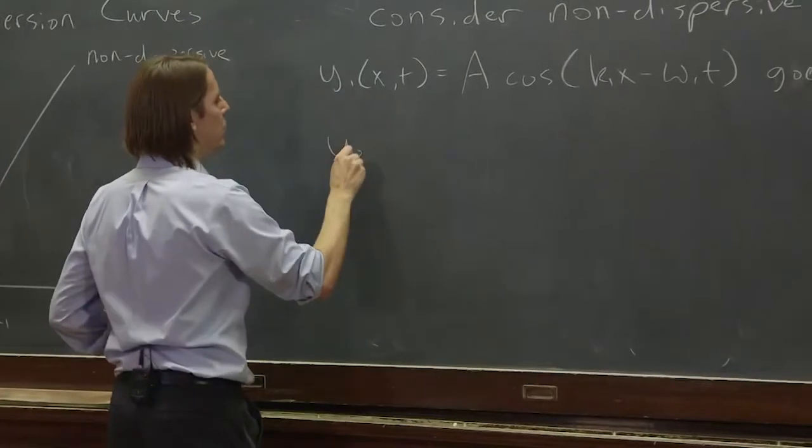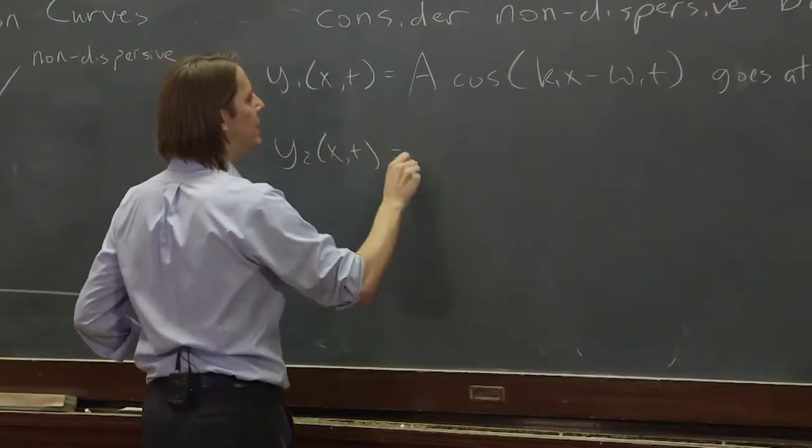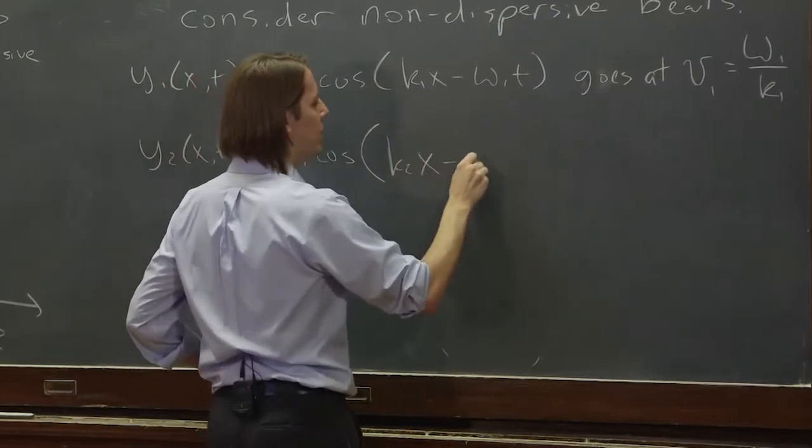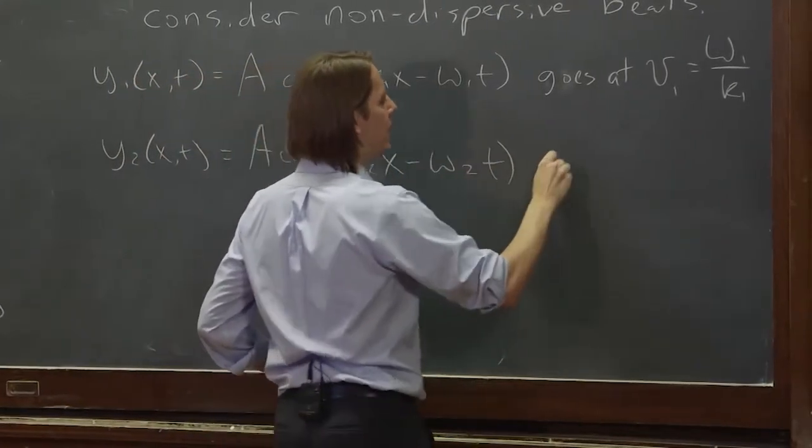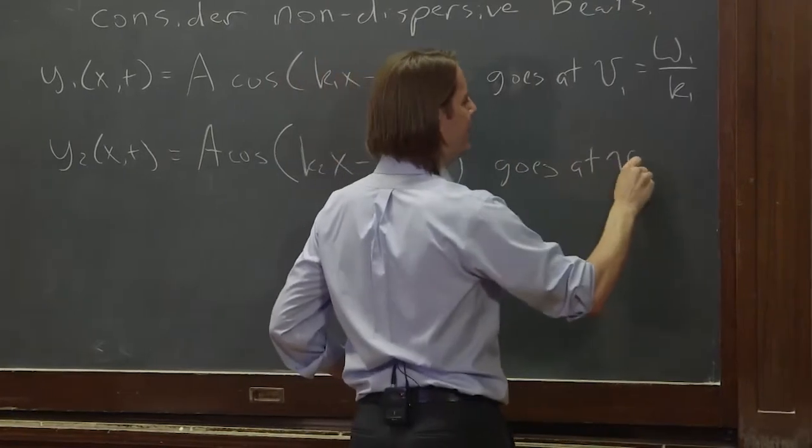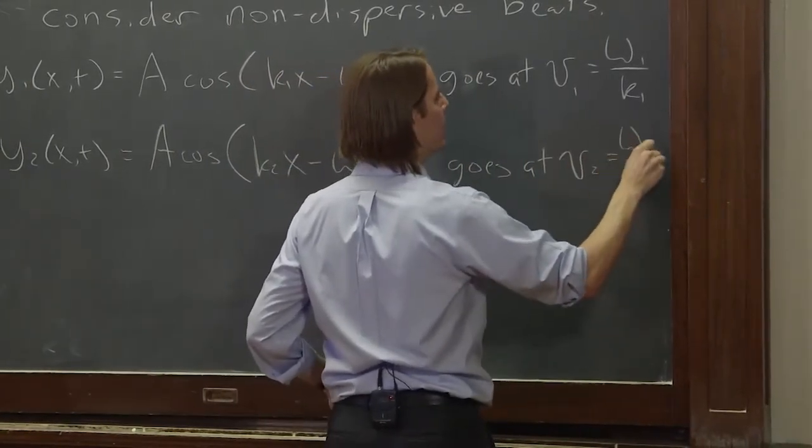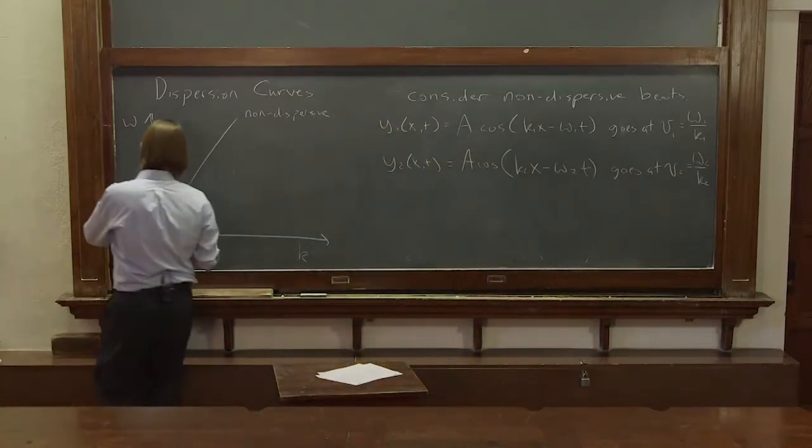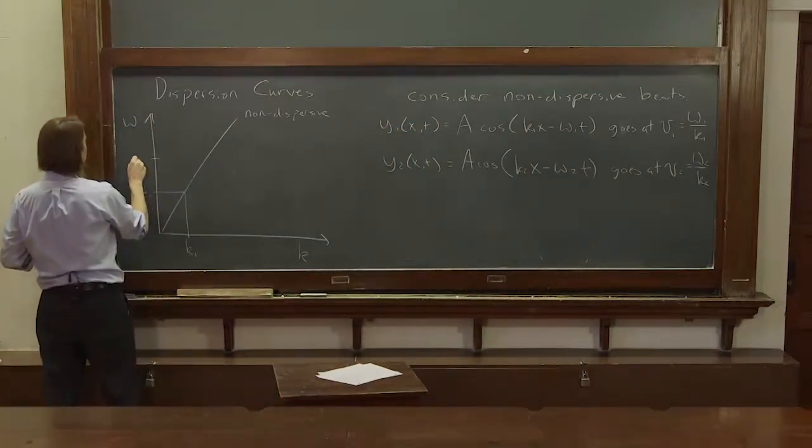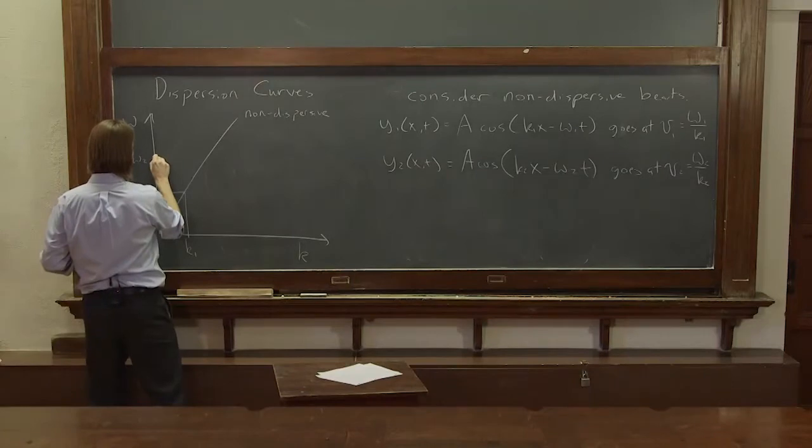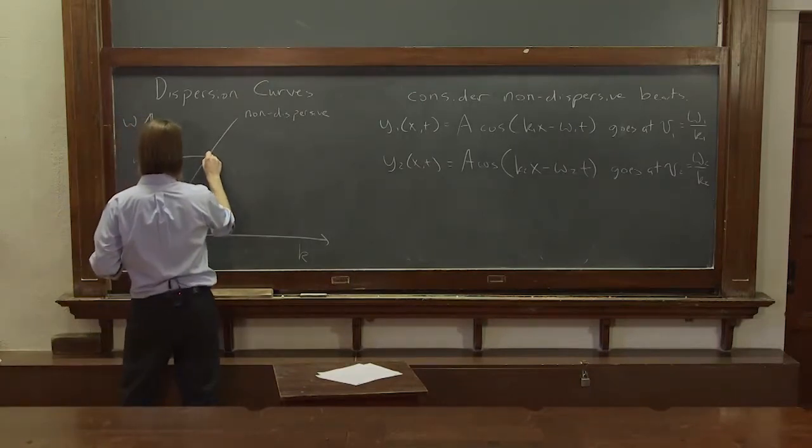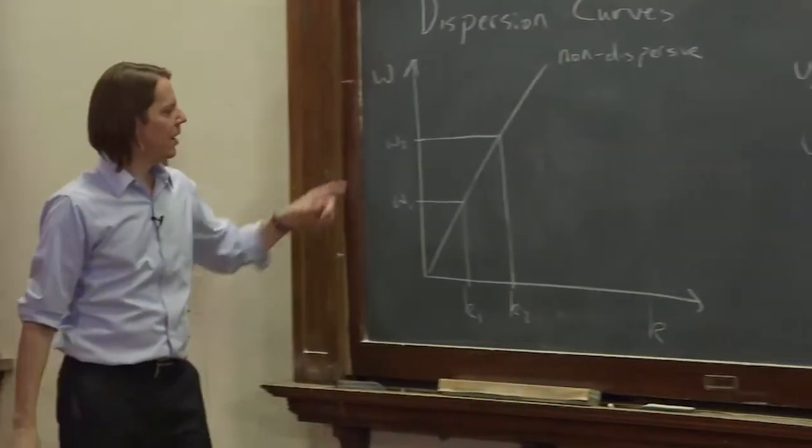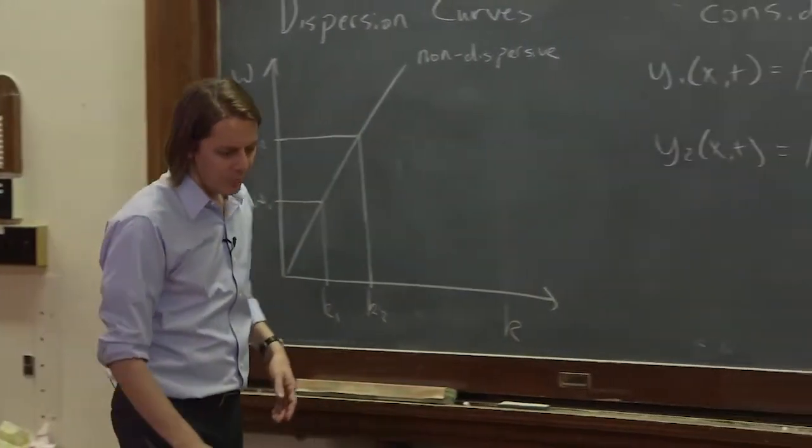Okay, and we'll have y₂(x,t) is A cosine(k₂x - ω₂t), and it will go at v₂ equals ω₂ over k₂. So say, let's make it go roughly twice as fast here. ω₂ will be here and we'll come straight down. k₂ will be there. Higher frequency, higher wave number.